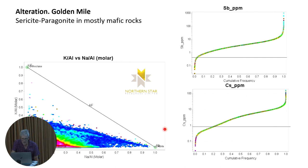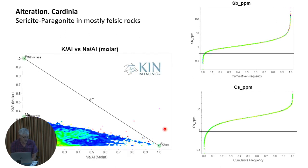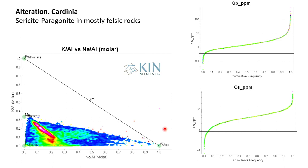Thanks to Northern Star for the Golden Mile data and to Kin Mining for this Codinia dataset — another cracking good dataset. This stuff is not just proximal to the lodes — this is their entire district, so we're seeing more distal stuff. Codinia has a few more felsic rocks and not so many mafics, but again you see this muscovite-to-paragonite mixing trend, with more data up towards the muscovite end because the initial starting composition is more felsic. Otherwise it's no different — lots of antimony, lots of cesium.